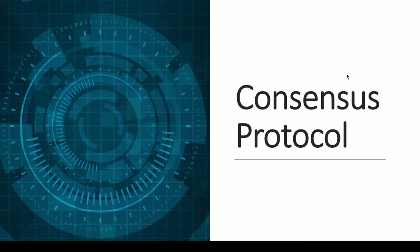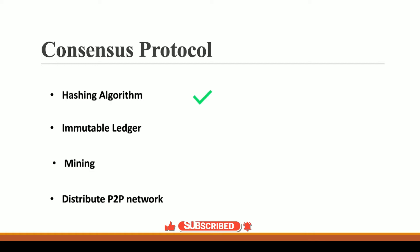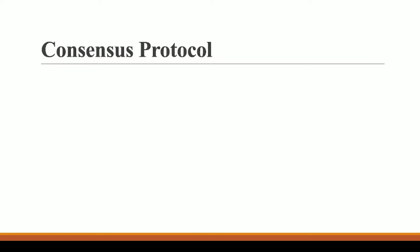In this video we are going to talk about consensus protocol. Before that, let us understand the concepts we have learned so far: hashing algorithm and its importance in creating an immutable blockchain ledger, miners who verify, validate, and create blocks, and the distributed peer-to-peer network with the help of which we distribute our blocks all over the network. Now, what is the importance of consensus protocol?